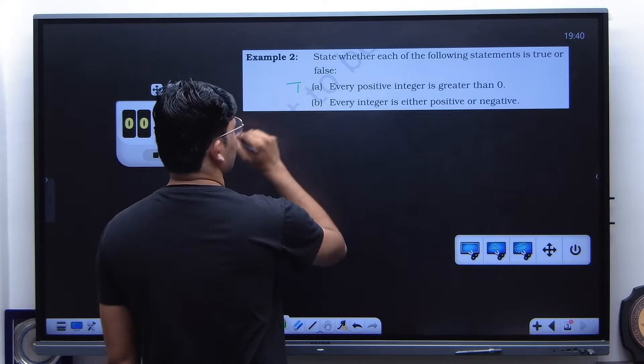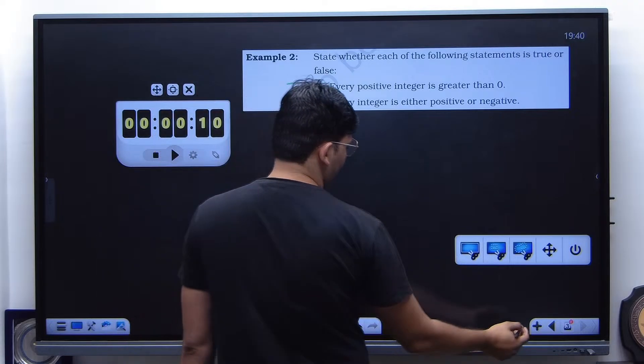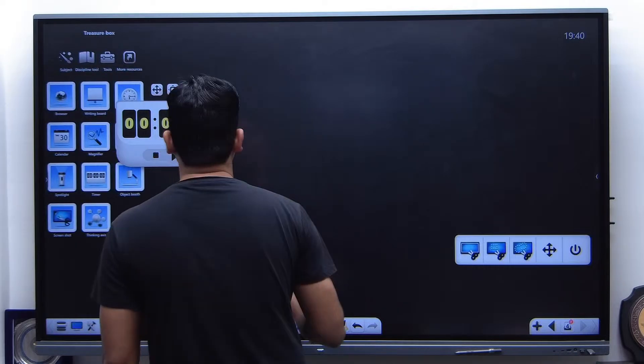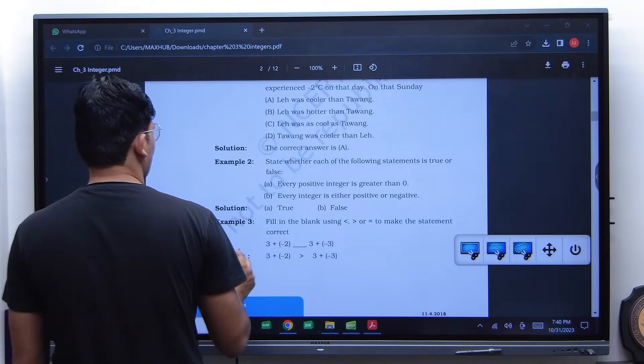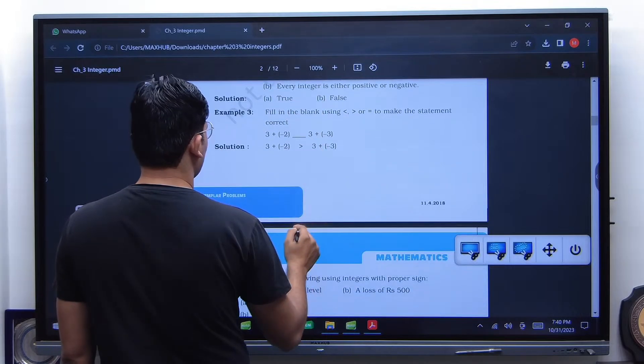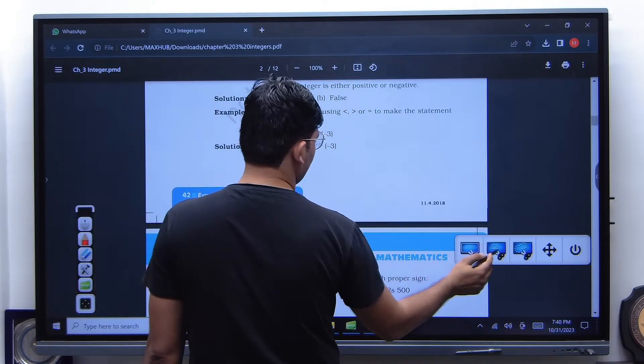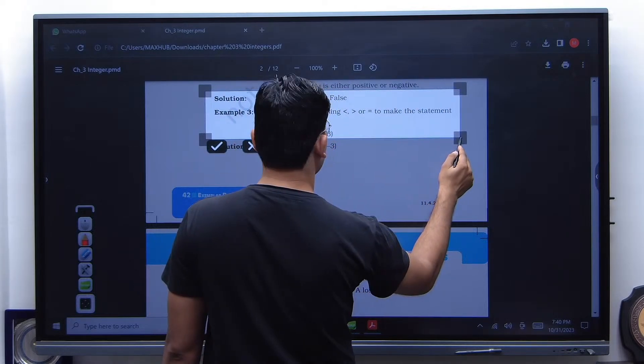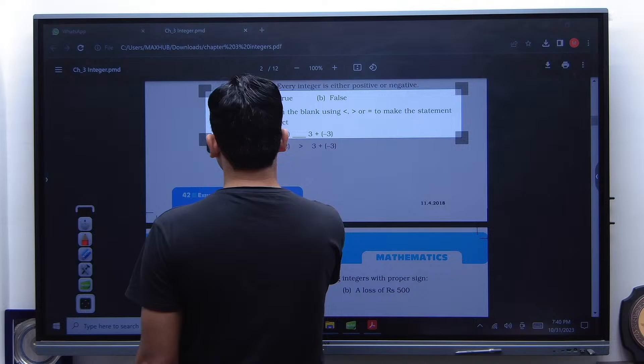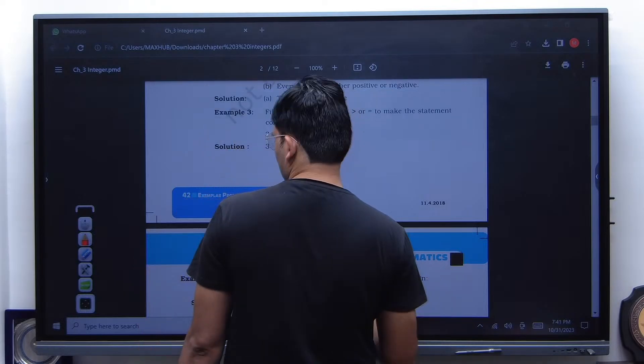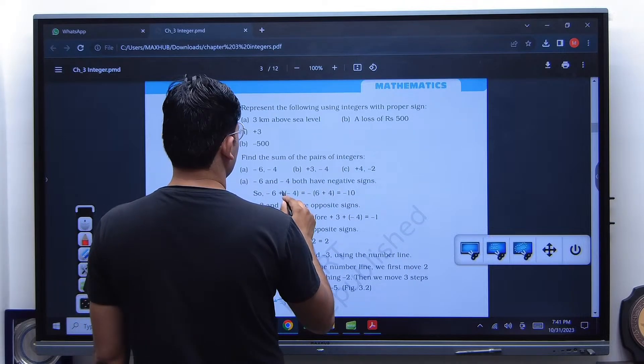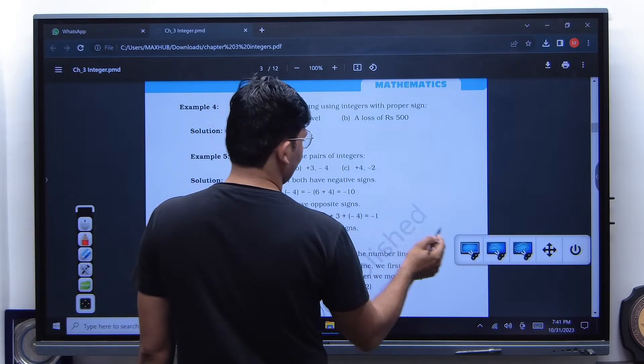So the first one is true, second one is false. Every positive integer is greater than zero, true. Every integer is either positive or negative. Very good, false. So hardly took 10 seconds. Wonderful there.